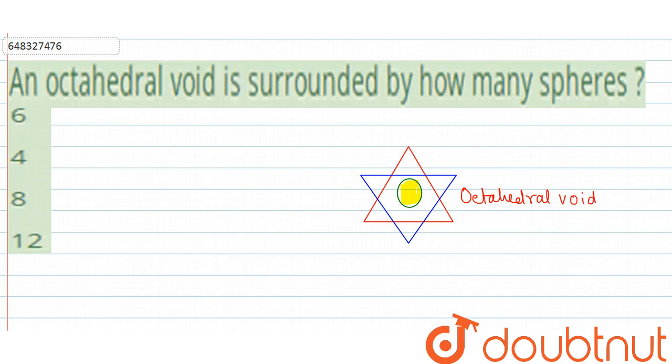We can easily say that the octahedral void is surrounded by a total of six spheres.